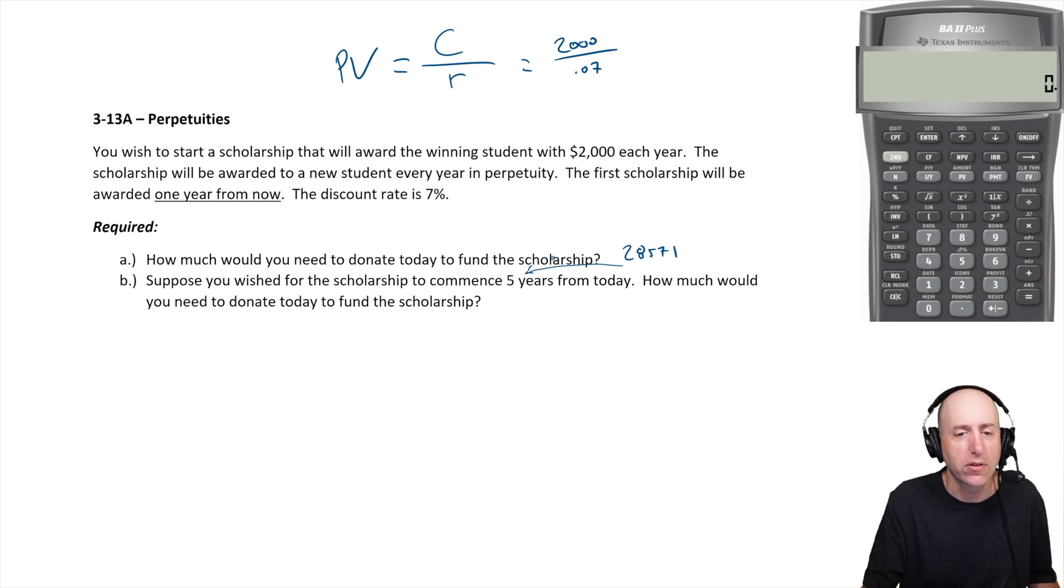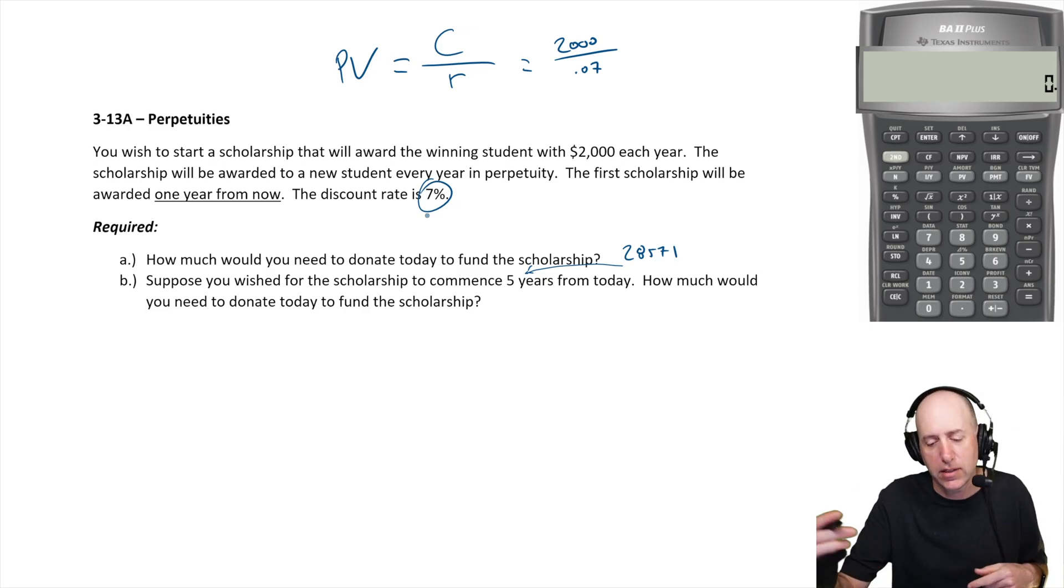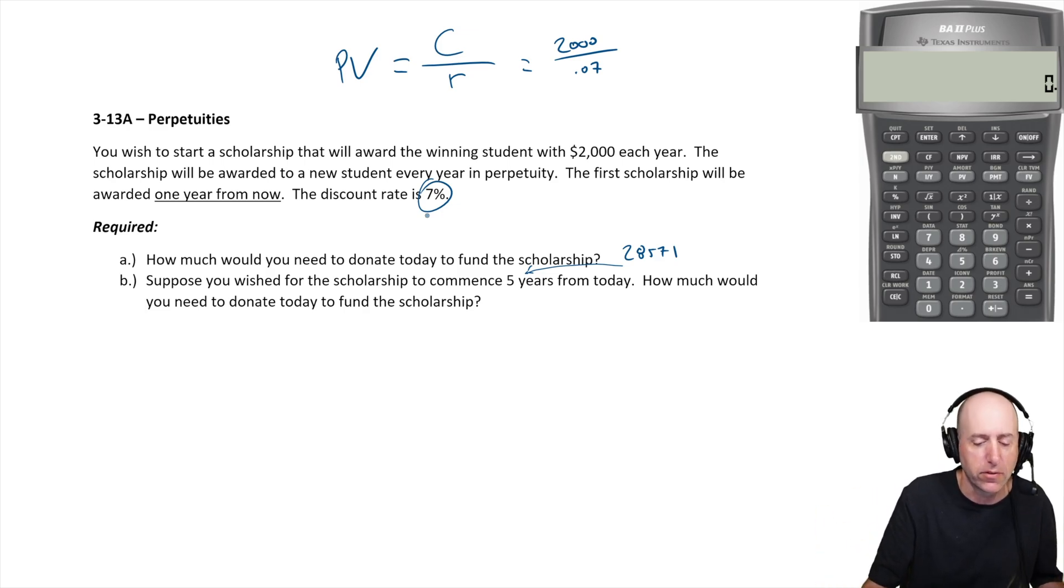How much money do I need to put away today that's going to grow at seven percent to get to 28,571 four years from now? That's the question. And here's the math: you go 28,571 divided by 1.07 to the fourth. Right, it's just a present value of a lump sum.